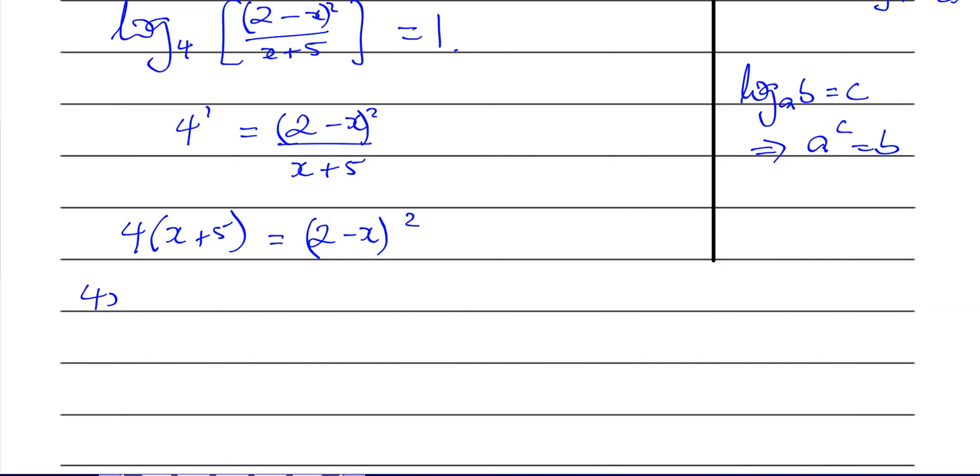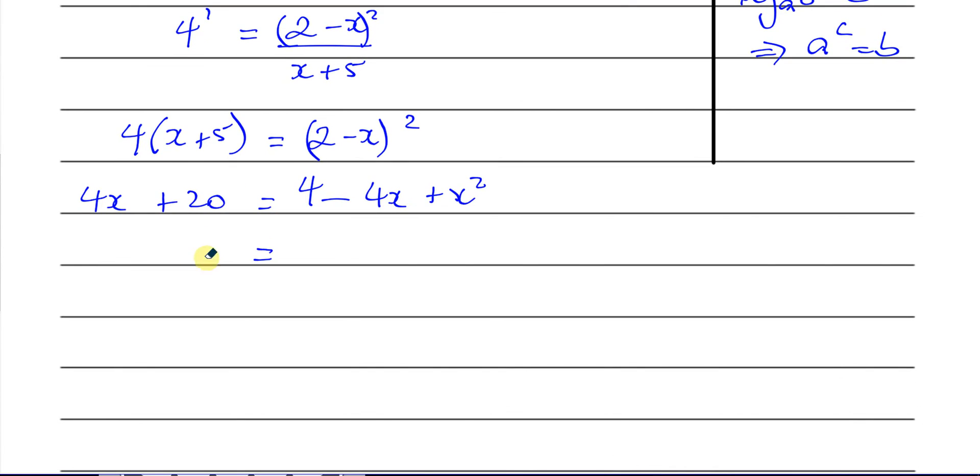Let me just do it step by step. So this will give you 4x + 20 equals, and this is going to be 4 - 4x + x² when you expand this bracket (2 - x) times (2 - x). Now let's bring everything onto one side, so this side I'll leave with 0.